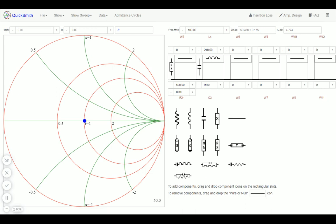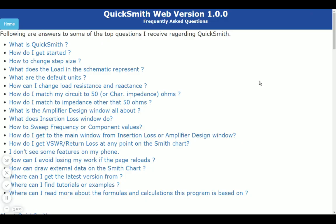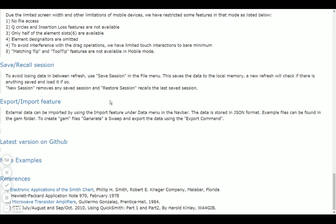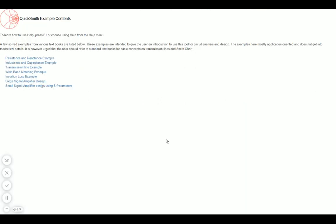You can find a link to more examples in the FAQ page. If you click onto FAQ and scroll down, you will see more examples. Here you can find examples starting from simple resistance and reactance all the way to small signal amplifier design using S-parameters. QuickSmith is freely available for download on GitHub. I have posted links for it.